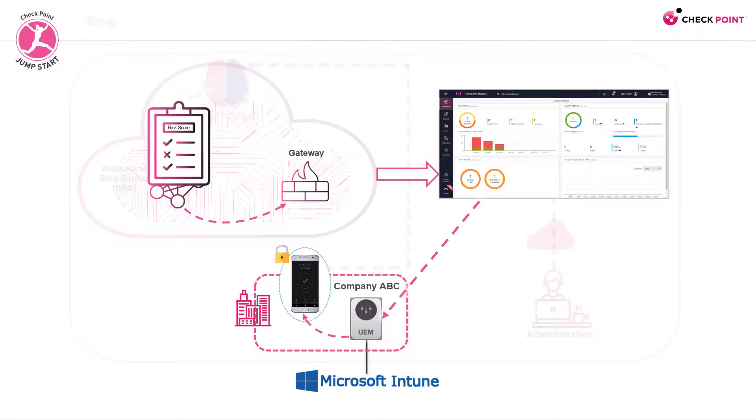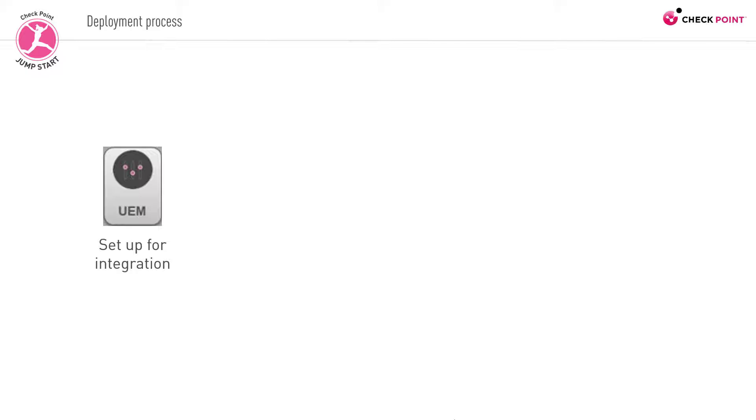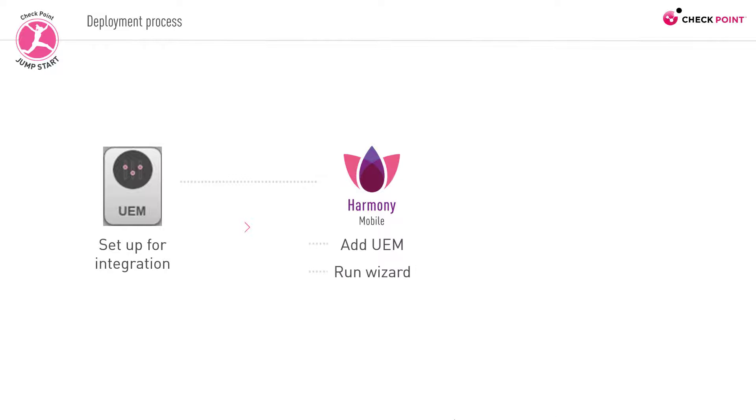With that in mind, let's first describe the high-level end-to-end deployment process of Harmony Mobile. To begin, you need to set up your UEM, preparing it for integration with a Harmony Mobile account. Once you complete the process on the UEM's end, and granted that you already have a Harmony Mobile account activated in the Infinity Portal, you add the relevant UEM and run the configuration wizard to complete the integration.